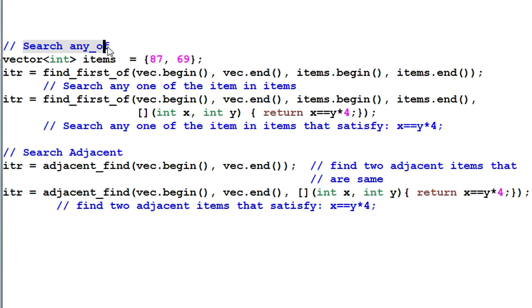Search any of. First, I define the items to be searched. Then I use the function find first off to find the first item in the back that matches any one of the items. And this is the generalized form of find first off, which checks the condition of x equal to y times of 4.